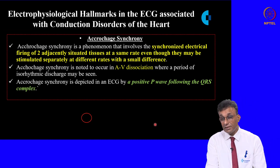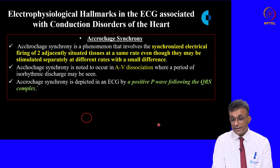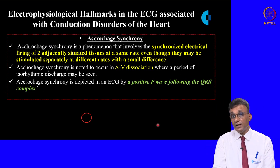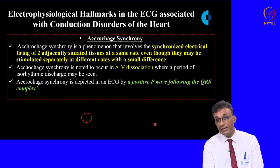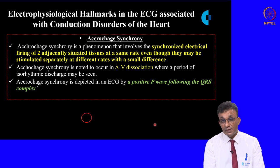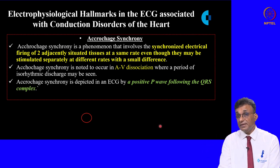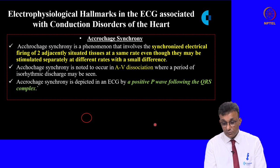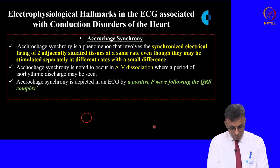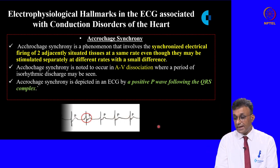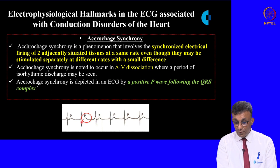Isorhythmic synchrony is another electrophysiological disorder where two adjacently situated cardiac tissues may fire at the same rate even though stimulated at marginally different rates. This may be seen in AV dissociation and is characterized by a positive wave following the QRS complex, as seen in this tracing.